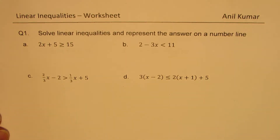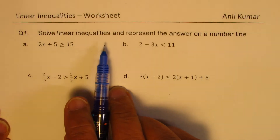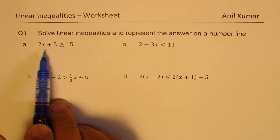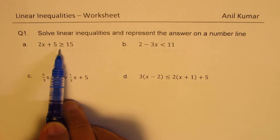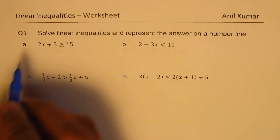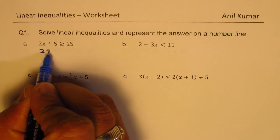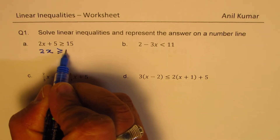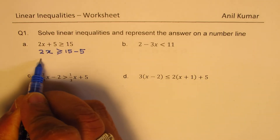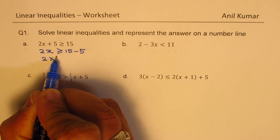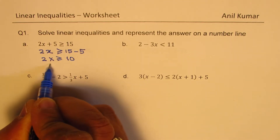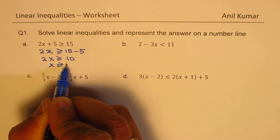Question number one is: solve linear inequalities and represent the answer on a number line. 2x plus 5 is greater than or equal to 15. To solve, we take away 5 from both sides. So we get 2x is greater than or equal to 15 minus 5, which gives us 2x greater than or equal to 10. Dividing by 2, we get x is greater than or equal to 5.